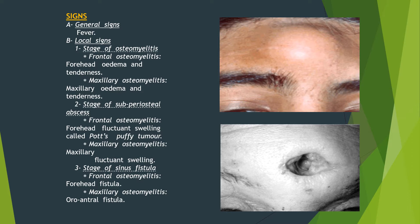By examination, there is fever generally. Locally, during the stage of osteomyelitis, frontal osteomyelitis shows forehead edema and tenderness; maxillary osteomyelitis shows maxillary edema and tenderness. In the stage of subperiosteal abscess, frontal osteomyelitis shows a fluctuant swelling called Pott's puffy tumor, and maxillary osteomyelitis shows a fluctuant swelling. If this abscess is not treated, frontal osteomyelitis will show a forehead fistula, and maxillary osteomyelitis will show an oroantral fistula.